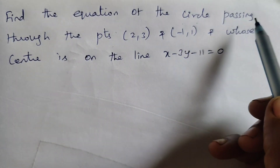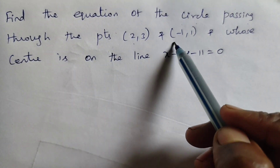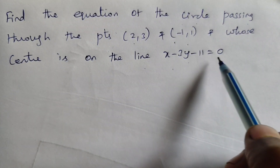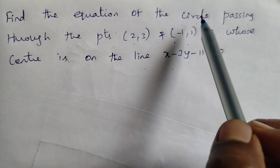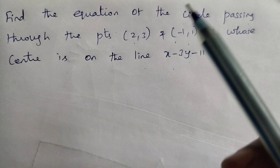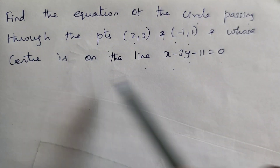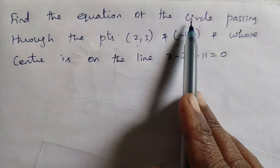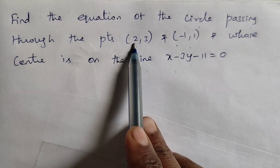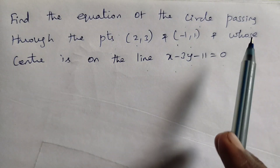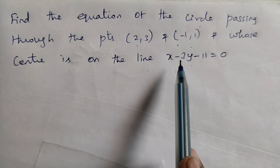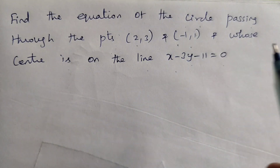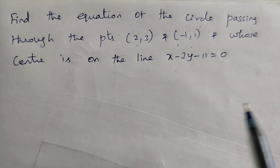Find the equation of the circle passing through the points (2,3) and (-1,1) and whose center is on the line x minus 3y minus 11 equal to 0. We have to find the equation of the circle by finding the center and the radius with the help of these conditions. The first hint is the two points, and the second hint is the line on which the center lies.